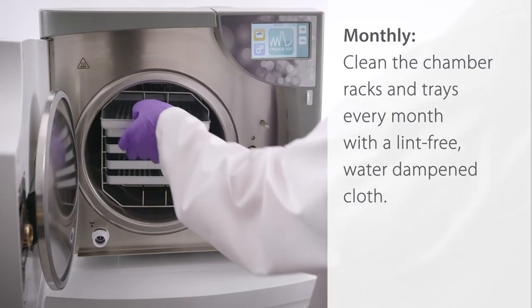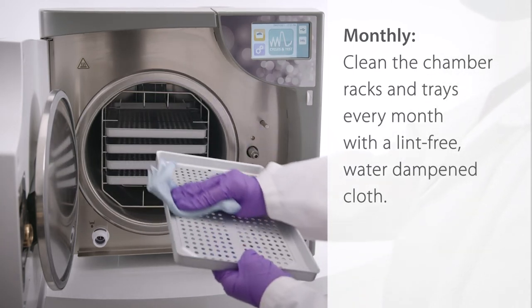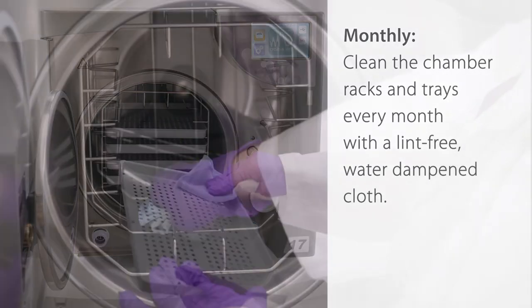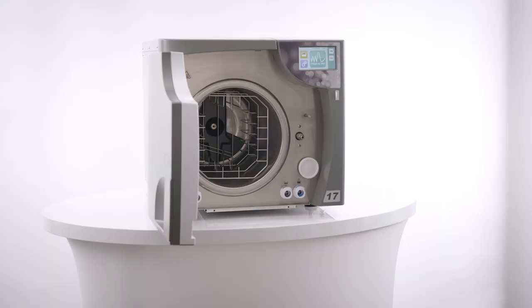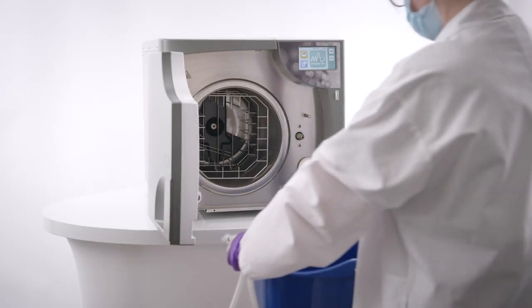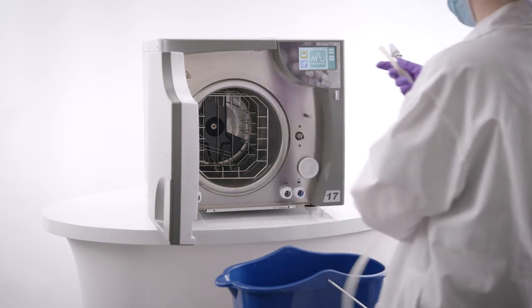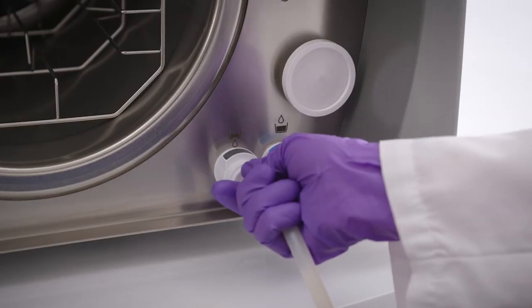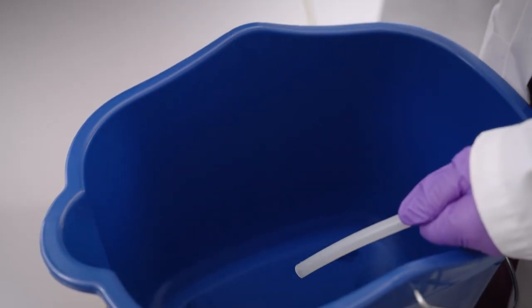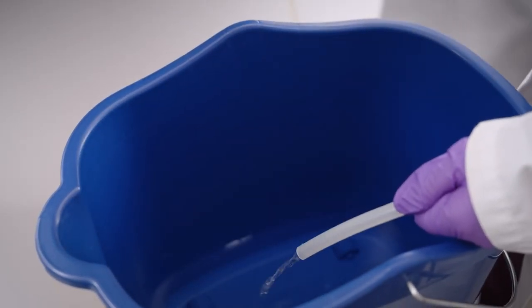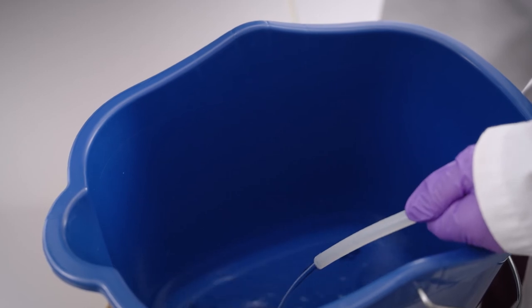Monthly. Clean the chamber racks and trays every month with a lint-free, water-dampened cloth. As well, drain and clean the internal water reservoir as per the instructions outlined in the operator's manual. If you have an external water storage tank used for automatic filling, it is also important to clean the tank following the manufacturer's instructions.